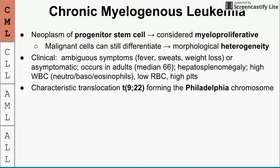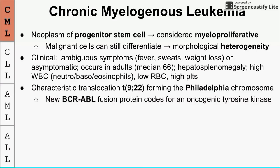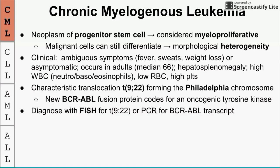The key translocation in CML is t(9;22), called the Philadelphia chromosome — specifically the small chromosome 22 with a piece of chromosome 9 translocated onto it. This produces a fusion gene product called BCR-ABL, which codes for an oncogenic tyrosine kinase that drives mass cell production. We diagnose CML by looking for the t(9;22) translocation with FISH, or by detecting the BCR-ABL transcript with PCR.